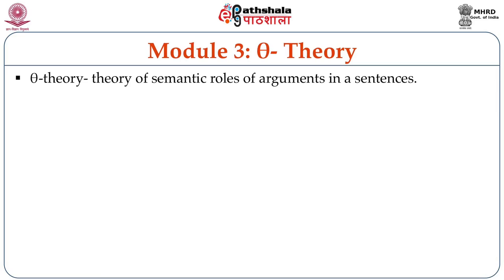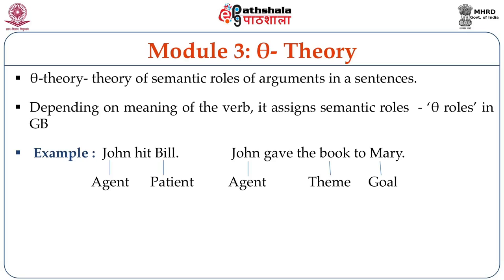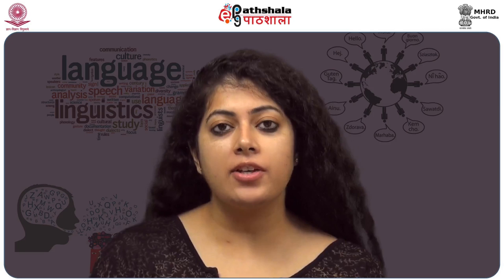Theta theory deals with the semantic roles a verb assigns to its arguments. In GB theory these semantic roles were called theta roles. In a sentence like 'John hit Bill,' John is the agent of the action and hence is given the agent theta role. Bill is the sufferer of the action and hence is given the patient theta role. In a sentence like 'John gave the book to Mary,' John is the agent, Mary is the patient, and the book — something not directly involved in the action in an obvious way — is given the theme theta role.